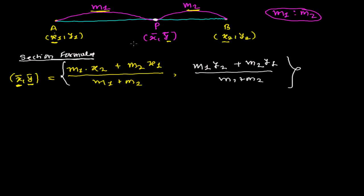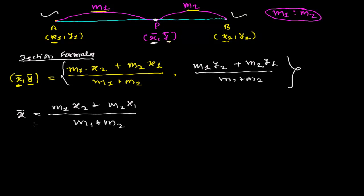Depending on the question, if you know both sets of coordinates and you know x̄, just equate x̄ to the formula: x̄ = (m1·x2 + m2·x1) / (m1 + m2). Since you know x̄, x1, x2 but not m1 and m2, solving this expression gives you m1/m2, which is your ratio m1 : m2.